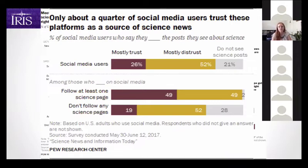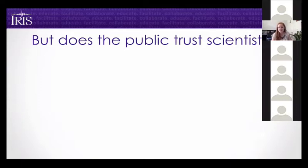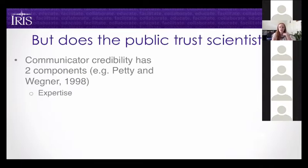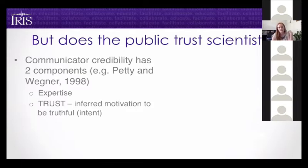Only about a quarter of social media users trust social media platforms as a source of science news — basically nobody trusts the people reporting science to them, whether news outlets or social media. But this is where you as a scientist come in. You've gained credibility through your studies and field. People in your social networks know you and trust you. Communicator credibility has two components: expertise, which you already have, and trust — the inferred motivation to be truthful, which we can think of as your intent.